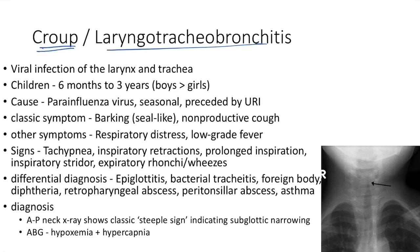Croup (laryngotracheobronchitis) is viral infection of the larynx and trachea, usually affecting children between six months and three years of age; boys are more affected than girls. The causative agent is parainfluenza virus. It is seasonal and usually preceded by upper respiratory tract infection.